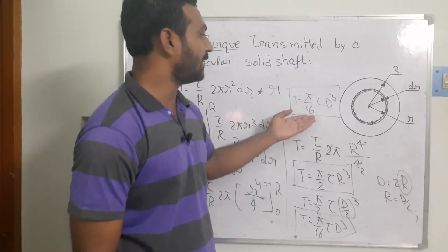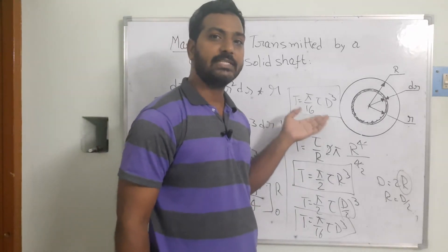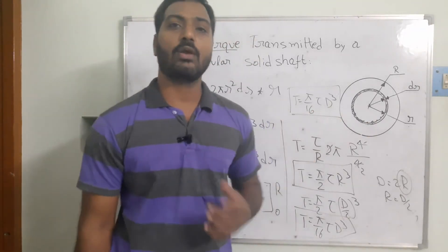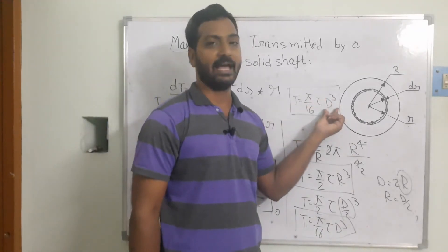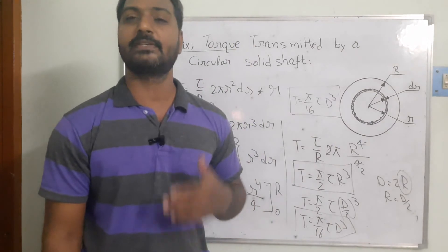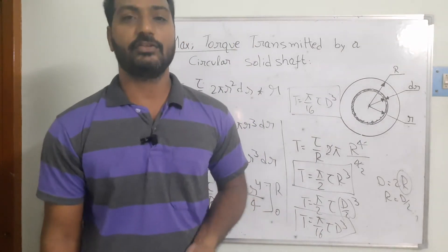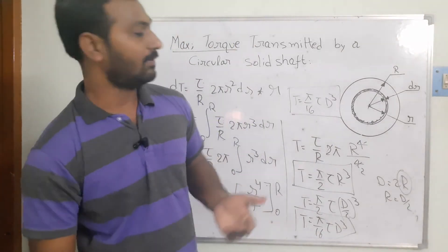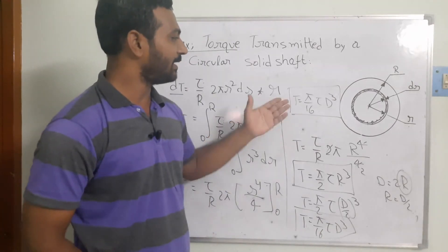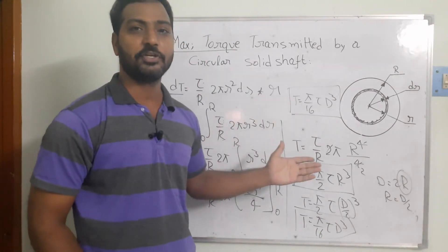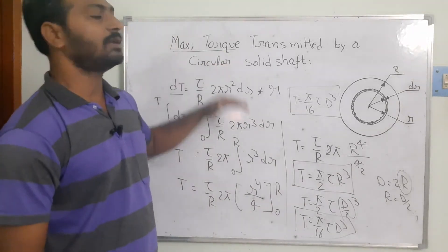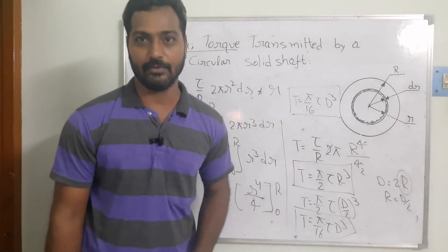This is the mathematical model which helps identify the maximum torque we can transmit for a given diameter. If the torque exceeds the yield strength, the metal will start to fail. I hope you are able to understand the mathematical derivation and the model for determining the maximum torque transmitted by the circular shaft. Thank you.